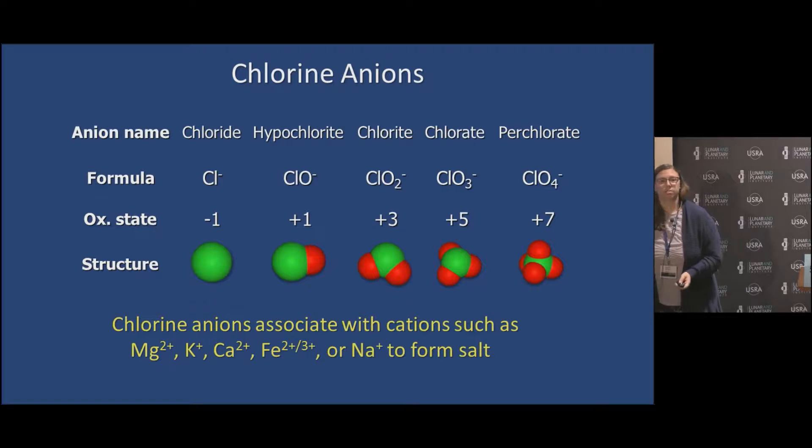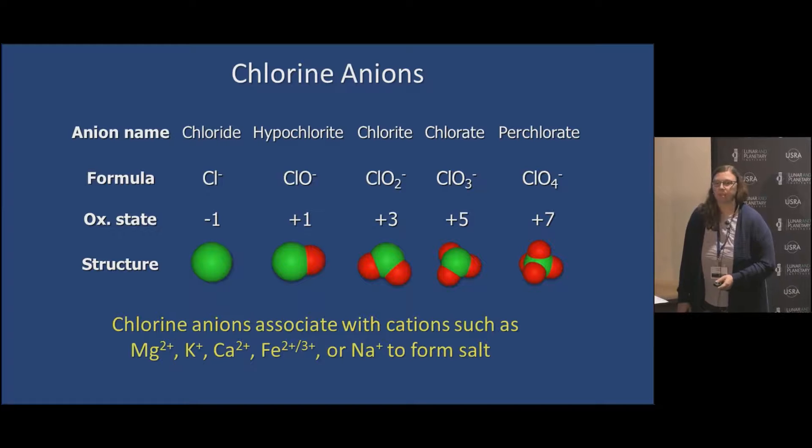But there's also some interesting oxidized chlorine species: chlorate and perchlorate. Here are their structures down here, and they form salts just like chloride does, so NaClO4, magnesium chlorate, and things like that. I know Mars is a dirty word here, but perchlorate was found on Mars.